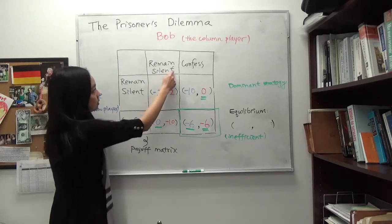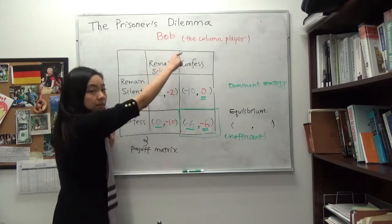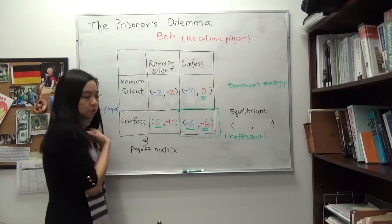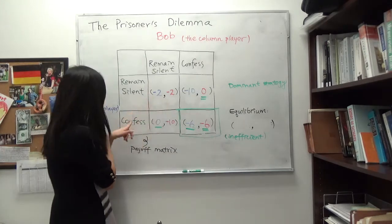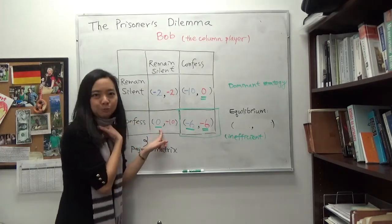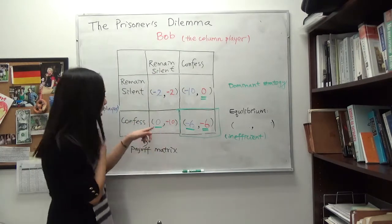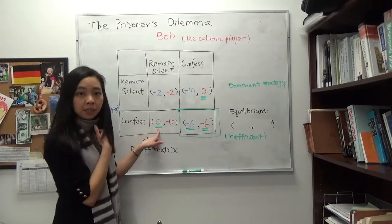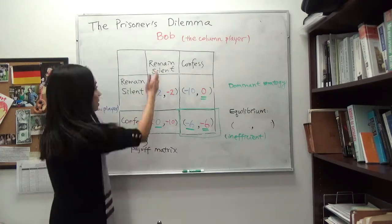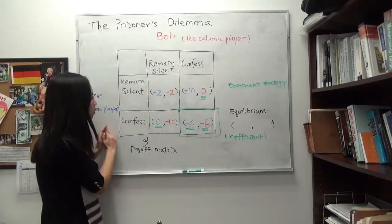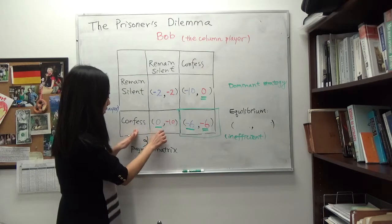We start with Bob remaining silent. Suppose Bob remains silent and you're Alice — do I choose to remain silent and get 2 years in prison, or do I choose to confess and get 0 years in prison, given that Bob chooses to remain silent? Well obviously, going free immediately is better than being in prison for 2 years. So given that Bob remains silent, Alice would want to choose to confess — we underline that here.